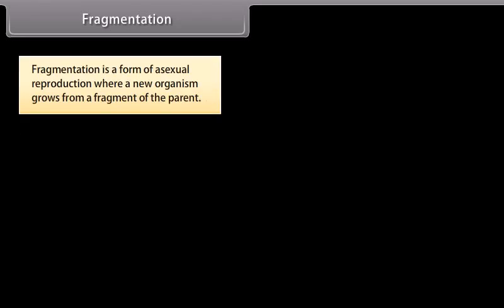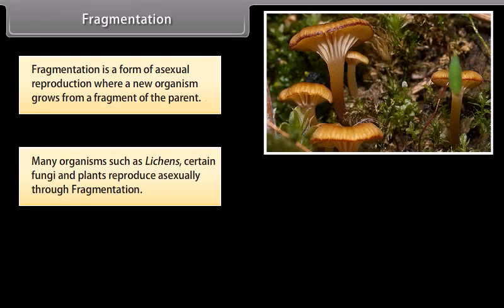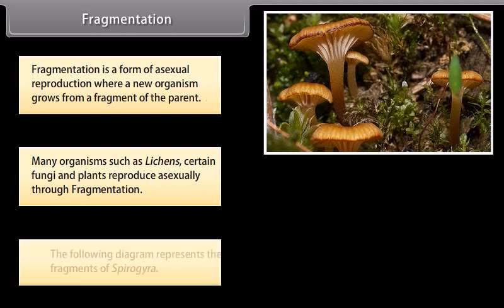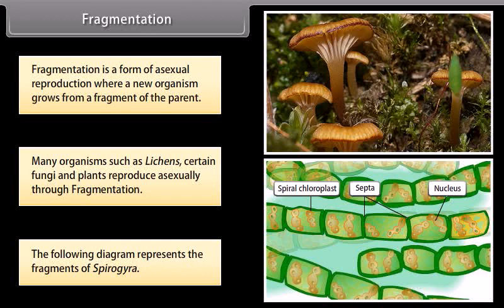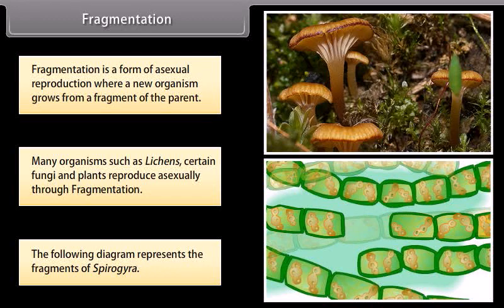Fragmentation is a form of asexual reproduction where a new organism grows from a fragment of the parent. Many organisms such as lichens, certain fungi, and plants reproduce asexually through fragmentation. The following diagram represents the fragments of Spirogyra.